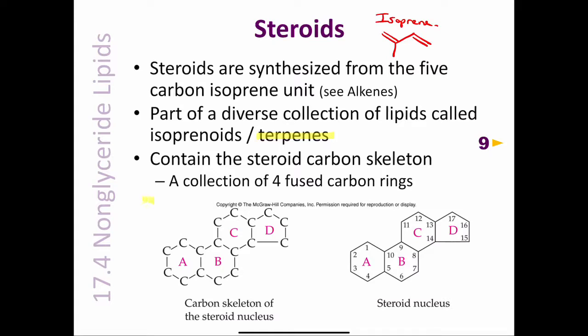All steroids will have this ABCD ring skeleton in this exact same configuration, showing all the different carbon atoms. Whenever you see this ABCD ring structure, which we call the steroid nucleus or the carbon skeleton of the steroid nucleus, you know immediately that you have some kind of steroid derivative.